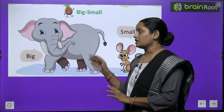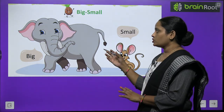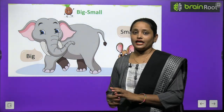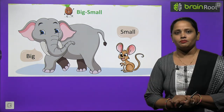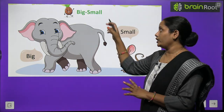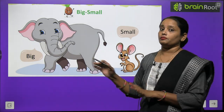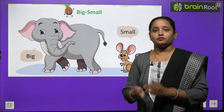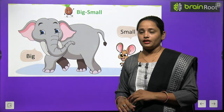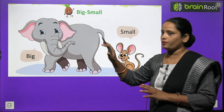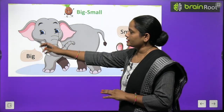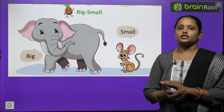Let's make out the difference between the given words. Here you can see there is a beautiful picture in front of you — aapke saamne ek bahut sunda sa picture hai, jismein ek bada sa elephant hai aur ek chota sa mouse hai. Toh aap batao, which one is big and which one is small? The elephant is big and the mouse is small.